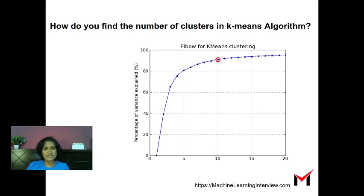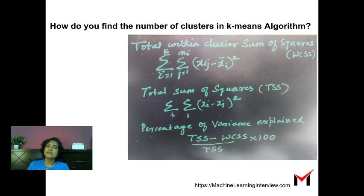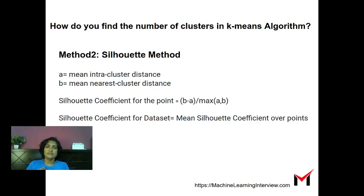Again, initially there is a rapid change in the metric, but where it stops changing rapidly is the elbow point — in this case k equals 10. You might get different values of k depending on which metric you use in the elbow method. This is the elbow method overall.